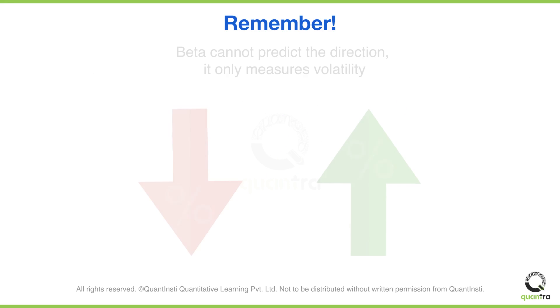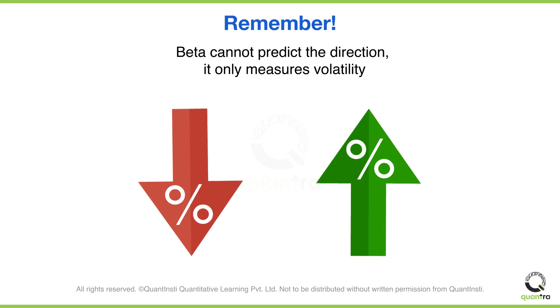However, remember that Beta does not predict where the price is headed. It only tells you how volatile the price movement might be. So, that was all about Alpha and Beta.